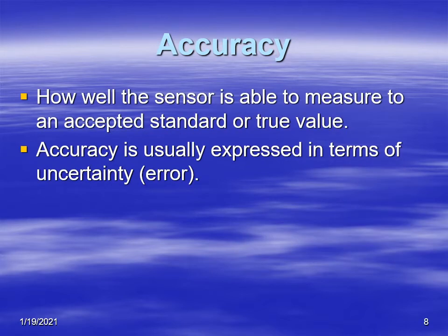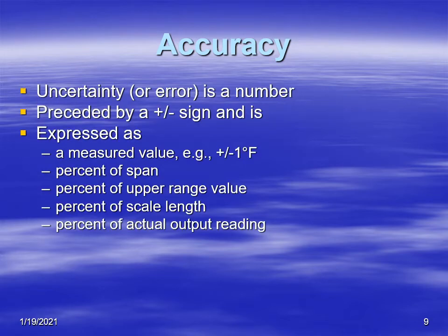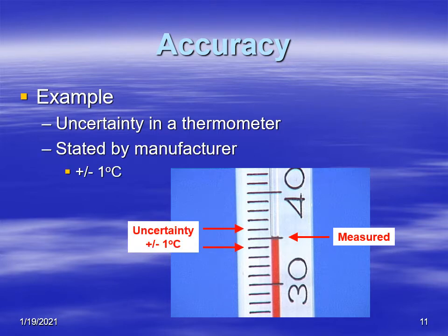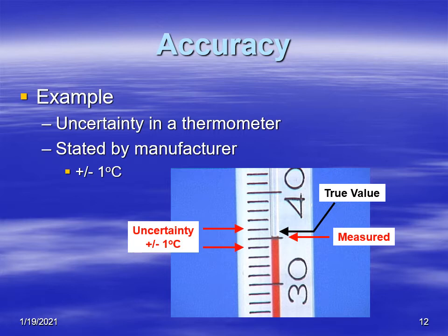Accuracy is how well a sensor is able to measure the true value or the accepted value of what you're trying to measure. We usually measure accuracy by giving some uncertainty, and when we state uncertainty we usually have a plus and minus sign and then a value or percentage. For example, this thermometer is measuring about 35 degrees Celsius. If we have an uncertainty of plus or minus one degree Celsius as stated by the manufacturer, it could be as low as 34 and as high as 36. So we'd expect the true value to be somewhere in that range.